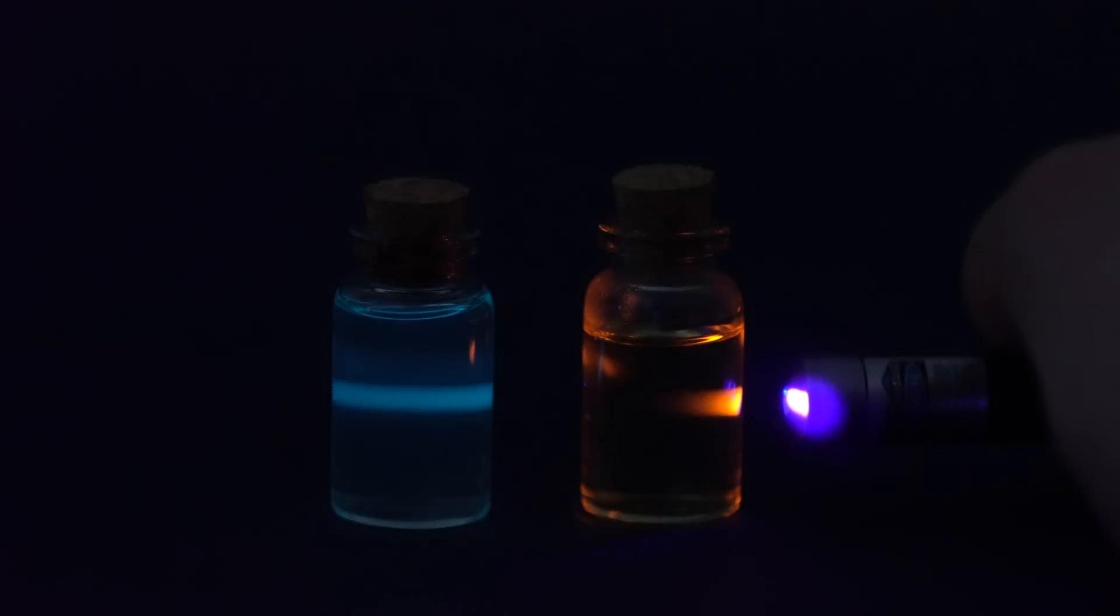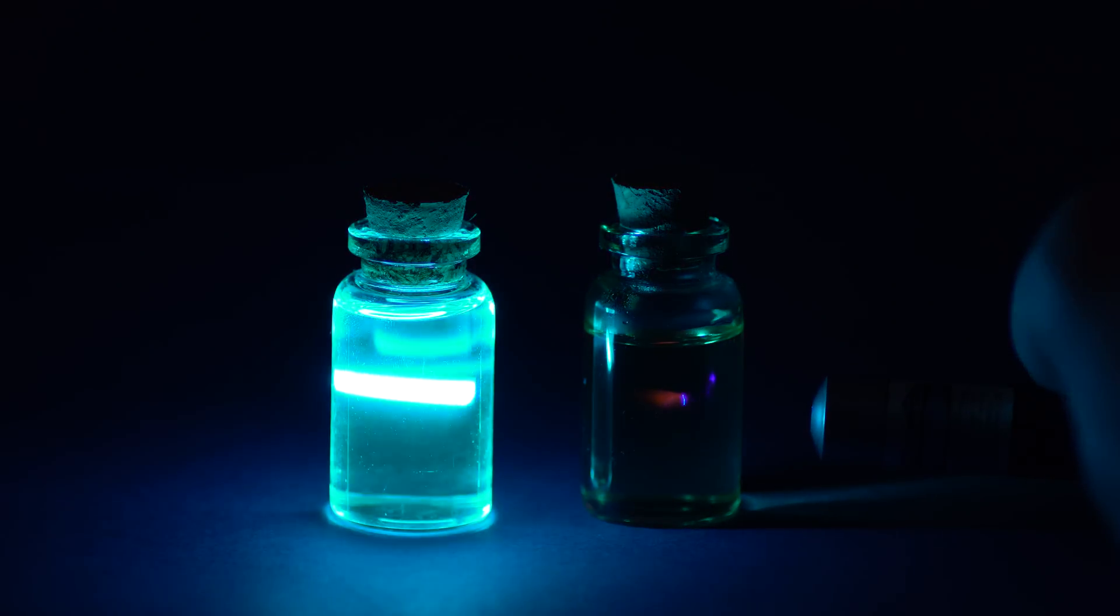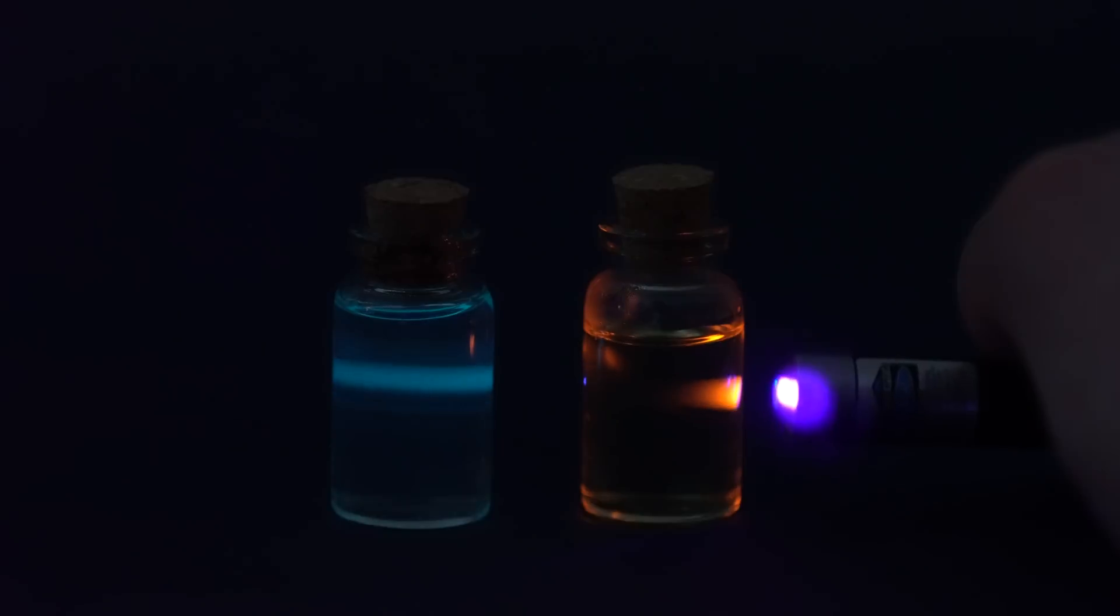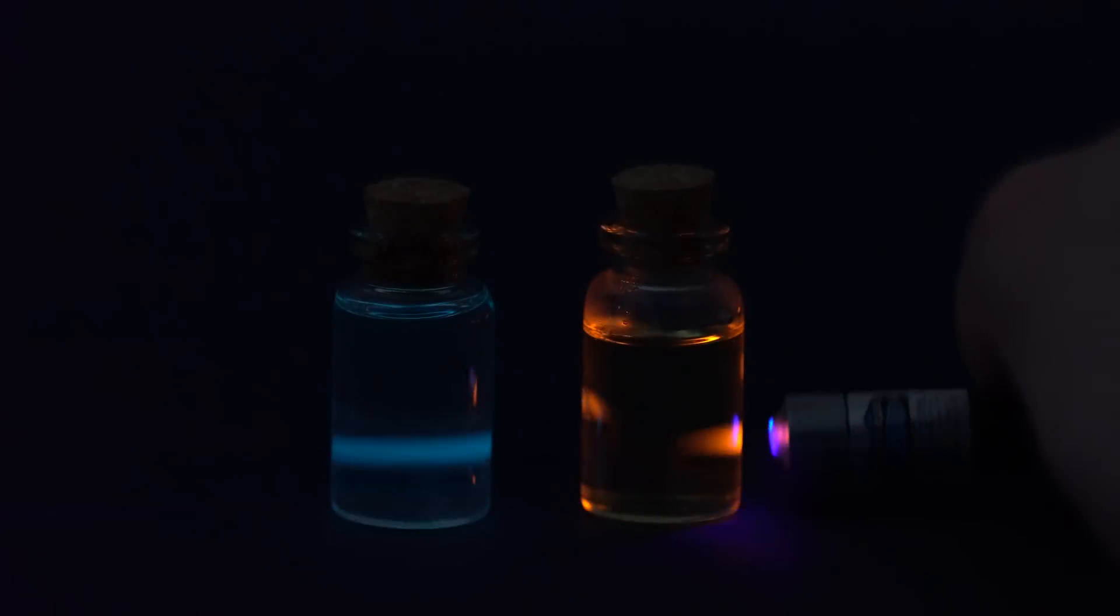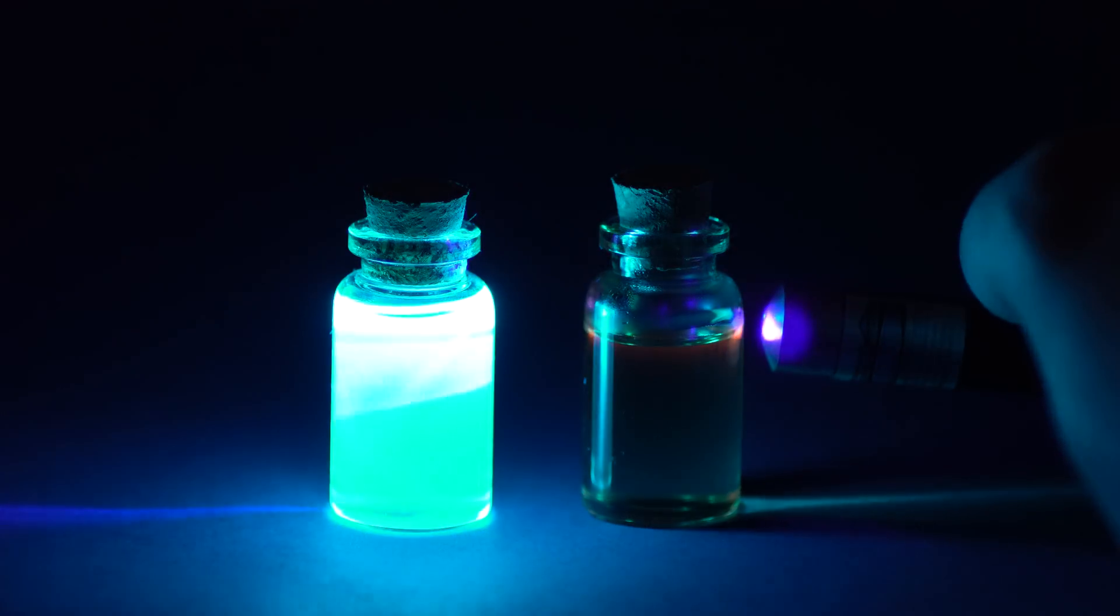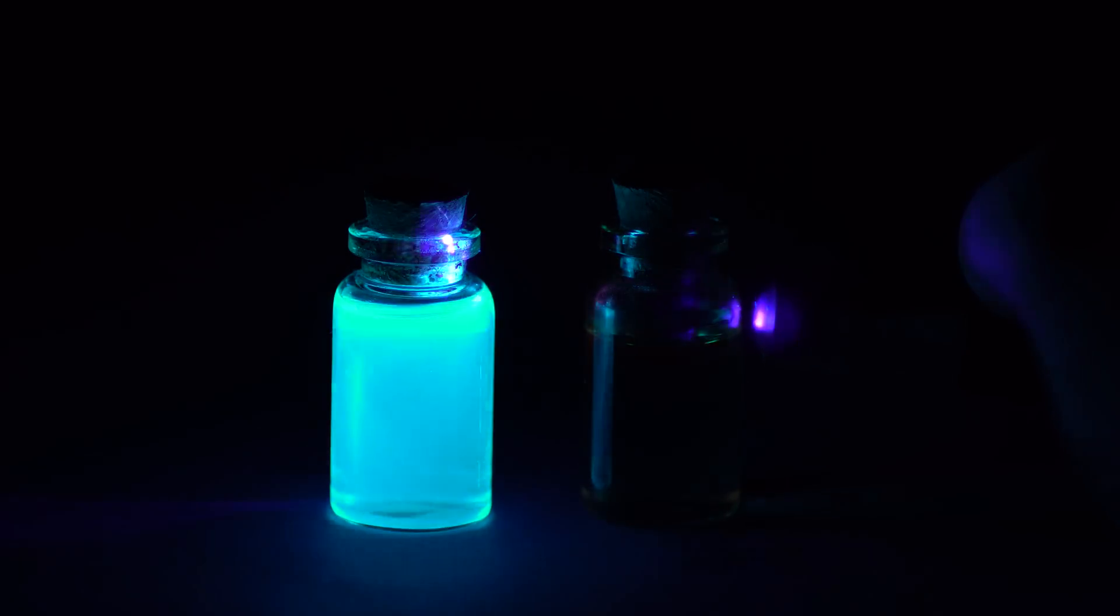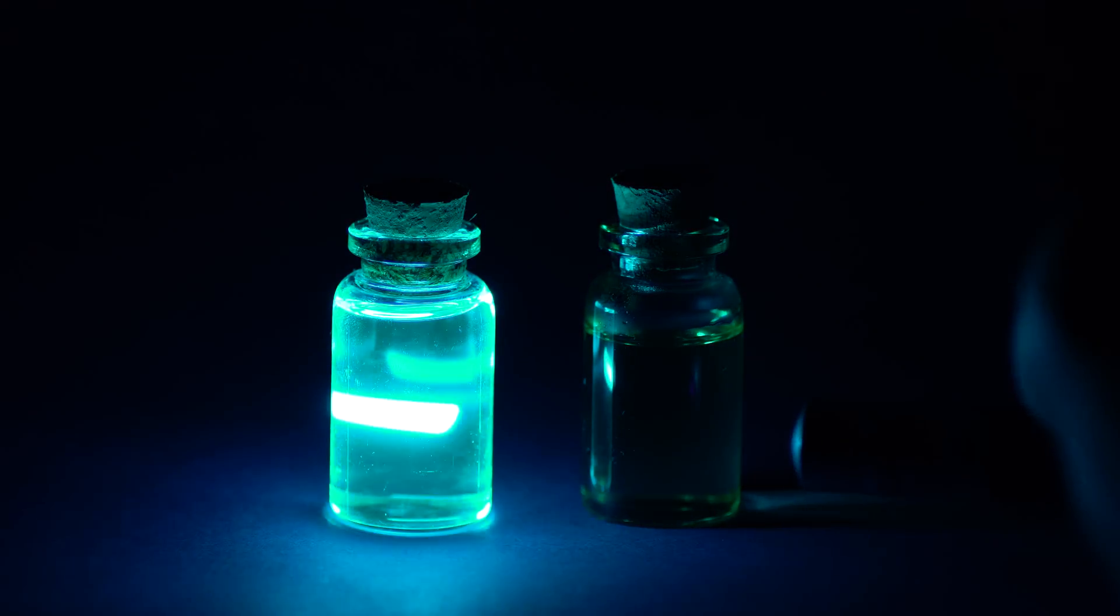Also, the samarium chloride solution slightly absorbs ultraviolet radiation. This can be seen if you pass a ray of the ultraviolet laser through a solution of samarium chloride. The phosphorus solution standing next to it begins to glow dimmer after passing the laser beam through the solution.